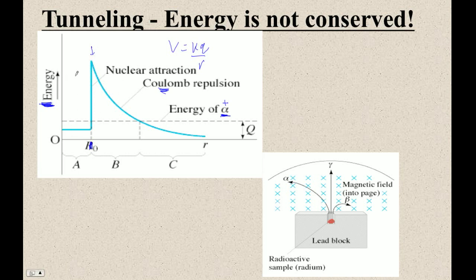Outside of that, because the strong nuclear force is a short-range force, we have to push the alpha particle all the way up to get it into the nucleus. But when alpha particles escape from the nucleus — when they undergo alpha decay — they escape and mysteriously have only a small amount of energy. We can measure their energy: we send them through magnetic fields, measure their radius of curvature, and determine their velocity and therefore their energy. And they don't have nearly enough energy to have come over the top of the barrier.